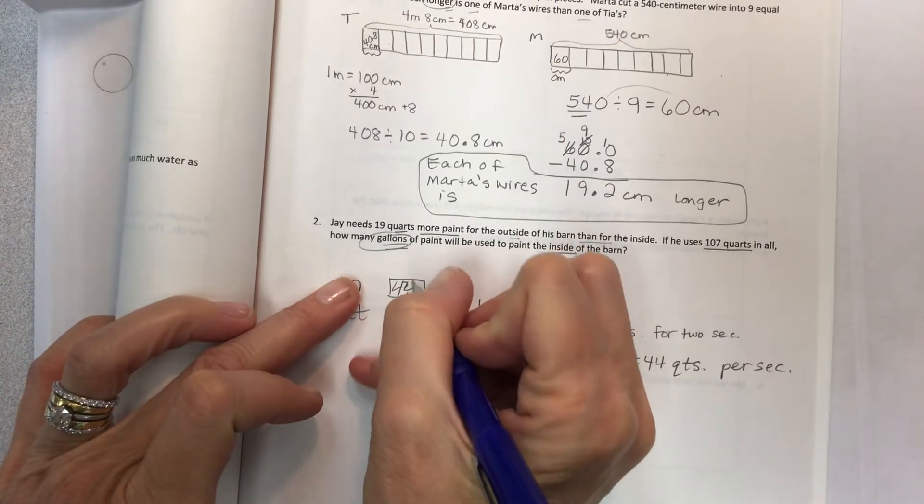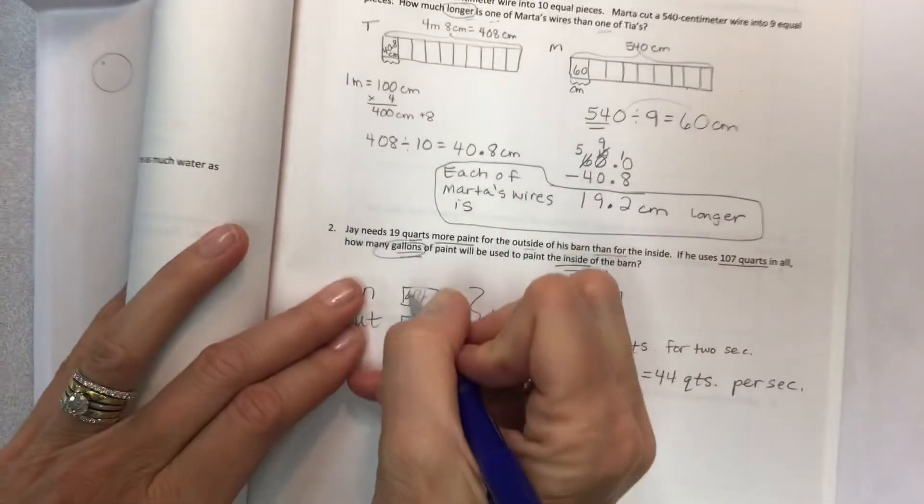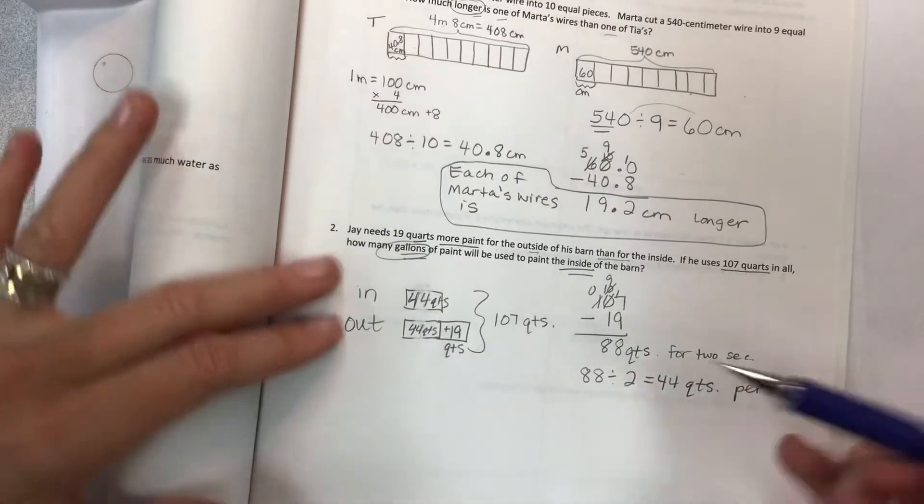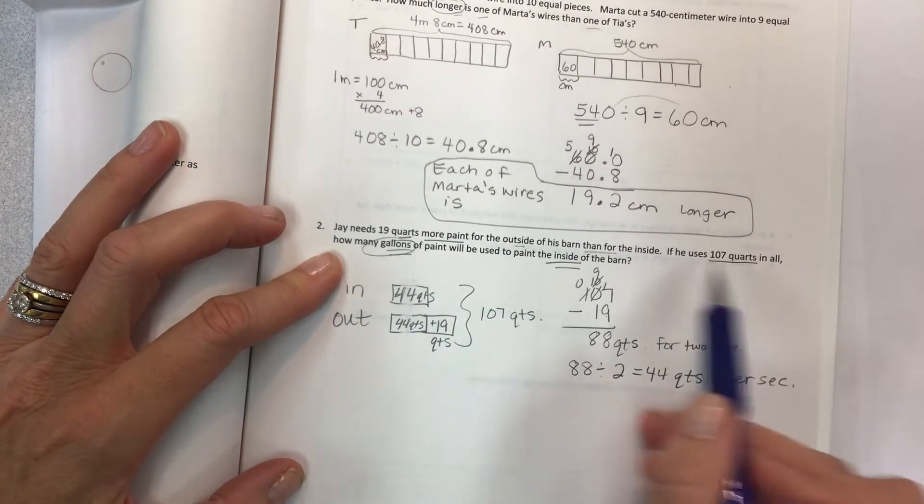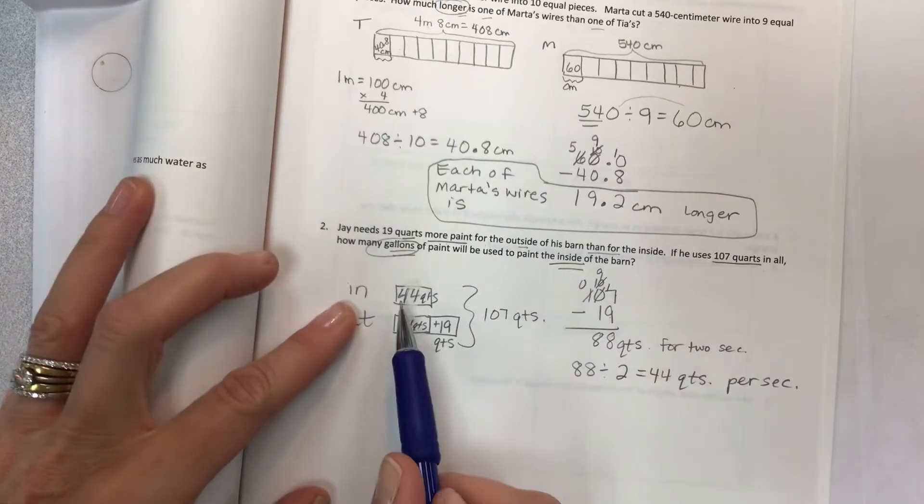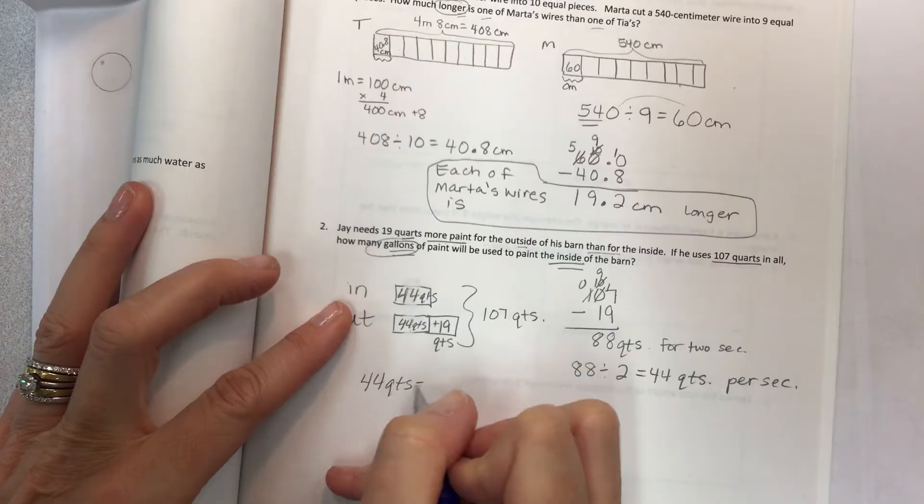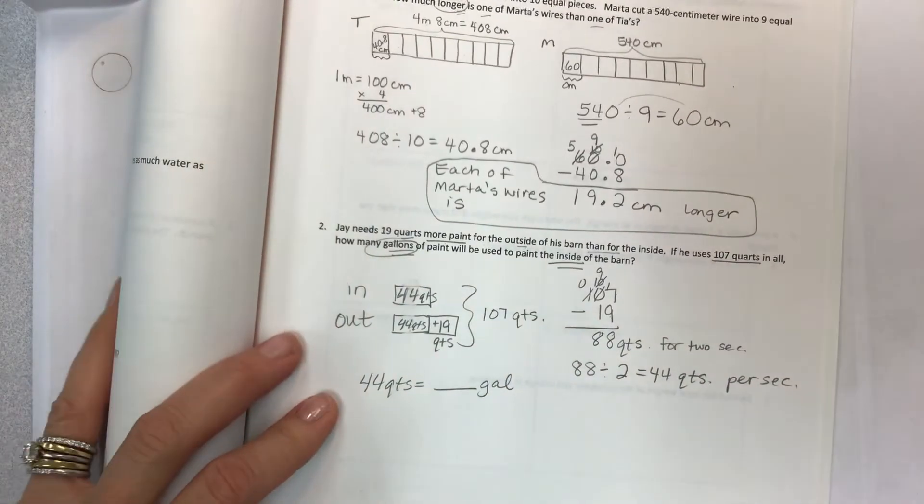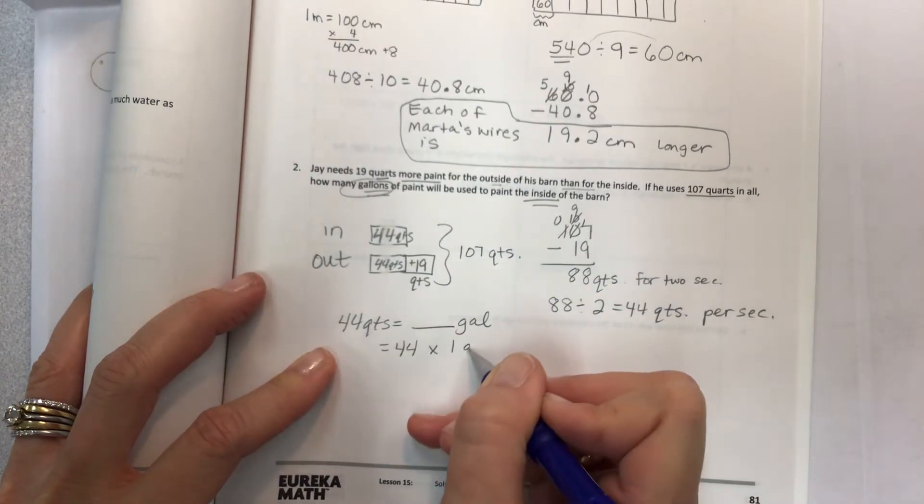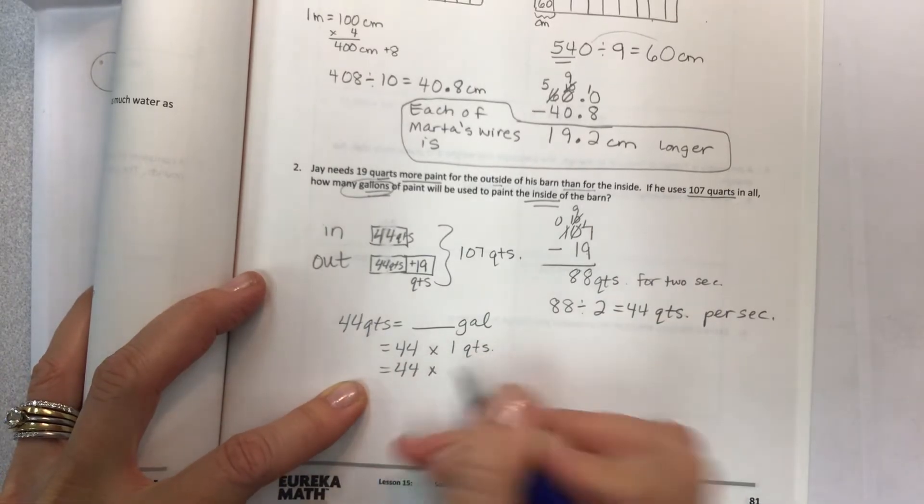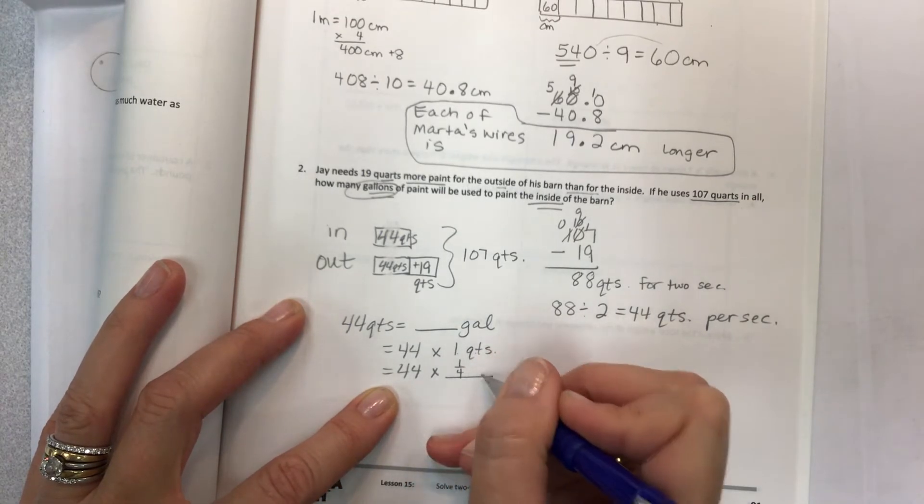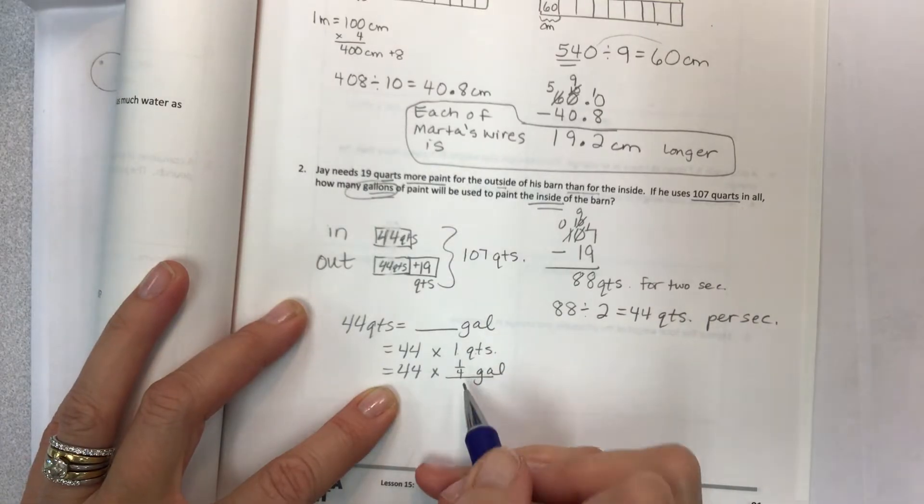So I need to find out how much is in one because we're talking about the inside of the barn. So then just 88 divided by two sections makes 44 quarts per section. Now we've got an answer here, 44. And if that question mark is bothering you, just erase it. 44 quarts and 44 quarts. Now go back to the question and see what is being asked of you. We have to find out how many gallons of paint will be used to paint the inside of the barn. I know that there are 44 quarts, but I don't know how many gallons that is. So now it becomes a conversion question.